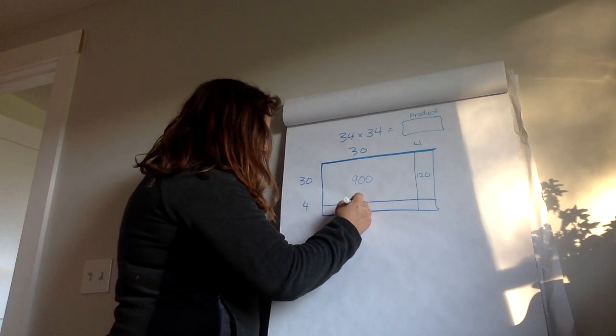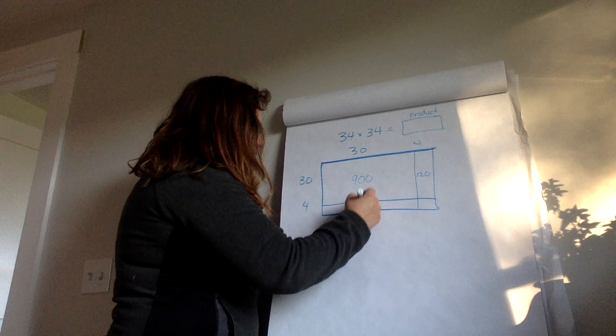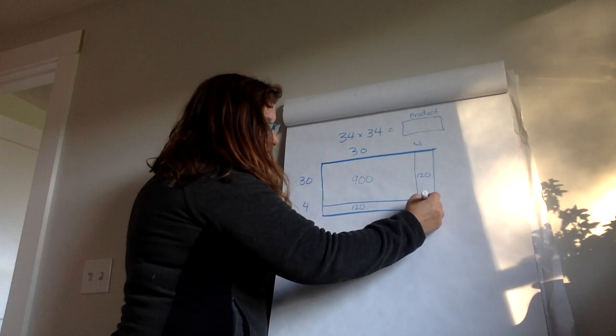4 times 30. 4 times 3 is 12. Add my 0. And then 4 times 4 is 16.